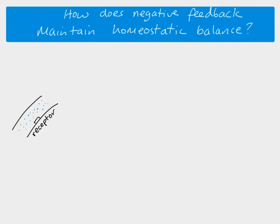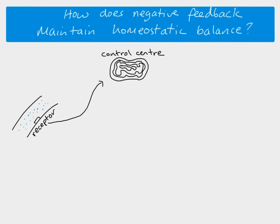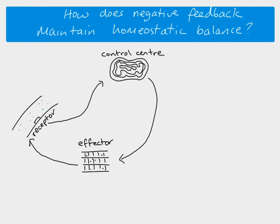When the receptors detect that increase — meaning that factor has moved away from the set limit the body wants to maintain — the receptor sends impulses to the control center, which is usually the brain or could be the spinal cord. The control center then sends impulses to the effector, which is a muscle or a gland. The effector will either contract (if a muscle) or release a hormone (if a gland), causing that factor which had increased to decrease again.